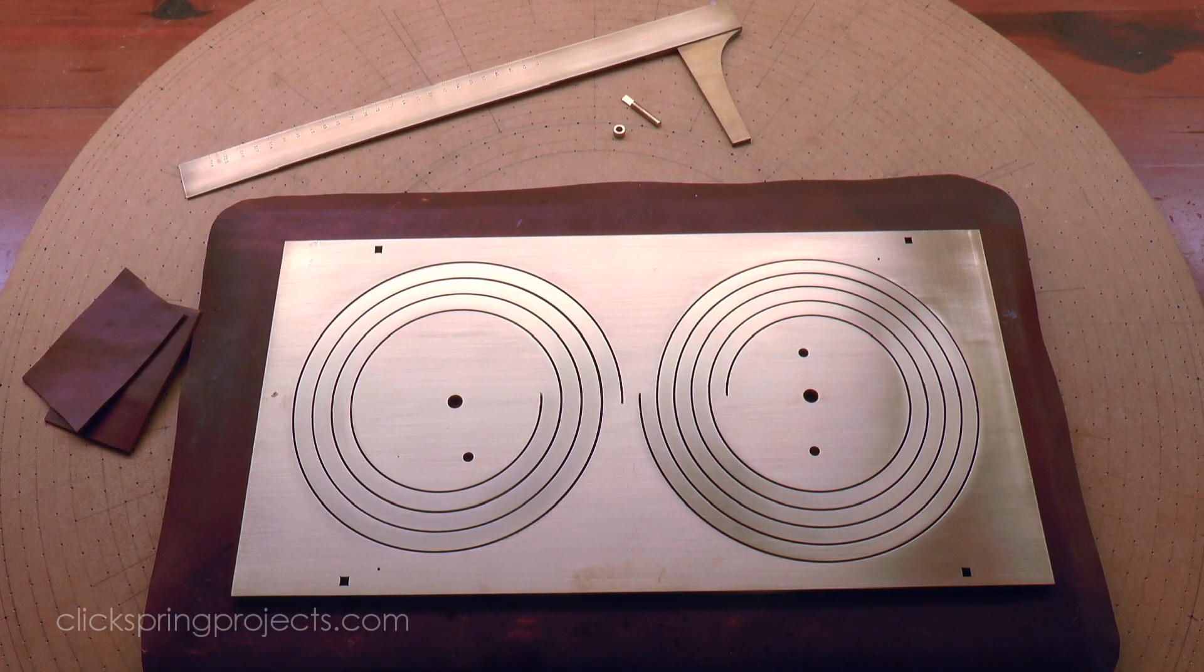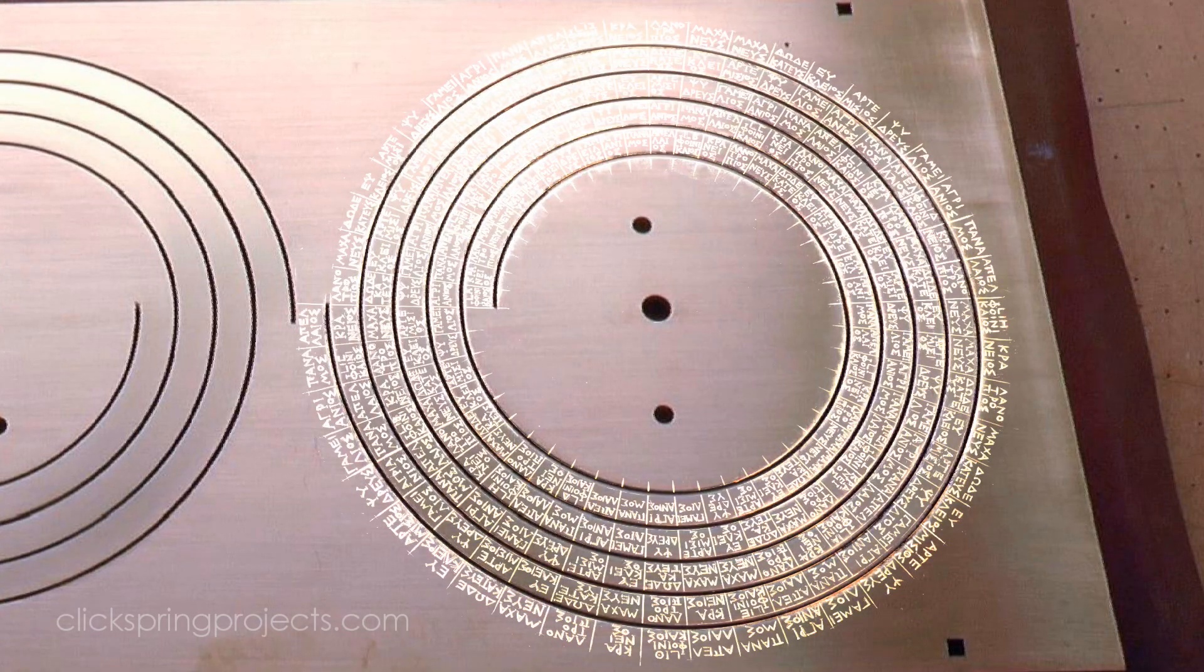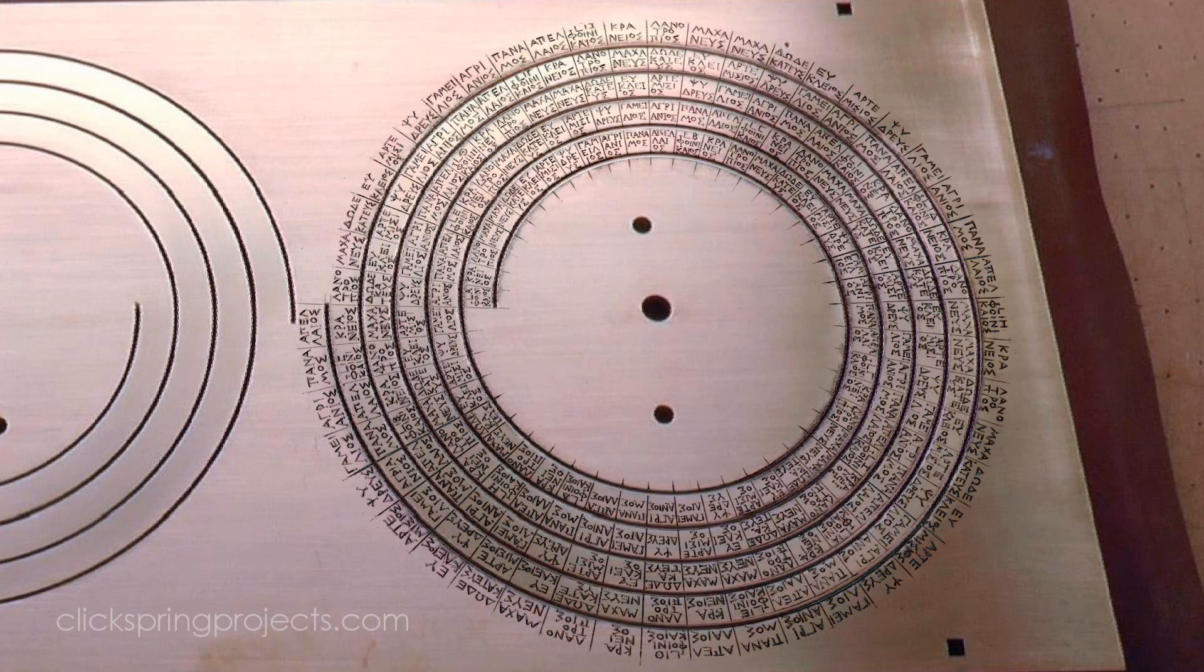This includes, as a major feature, what is probably the most complete calendar from the ancient Greek world, a lunar-solar calendar based upon the 19-year Metonic cycle, with the 235 lunar months laid out around a five-turn spiral.